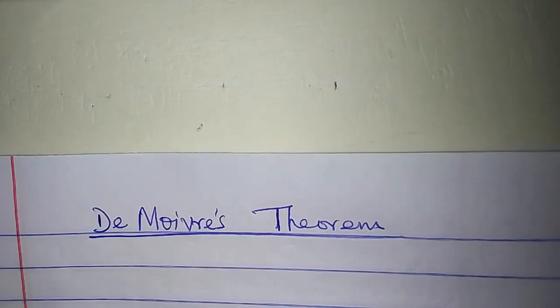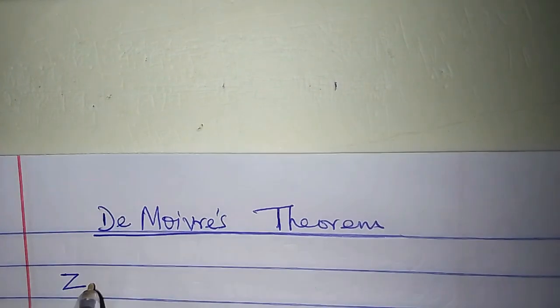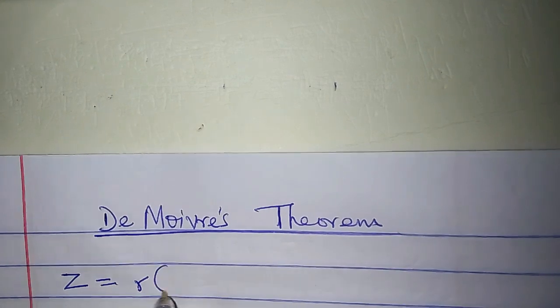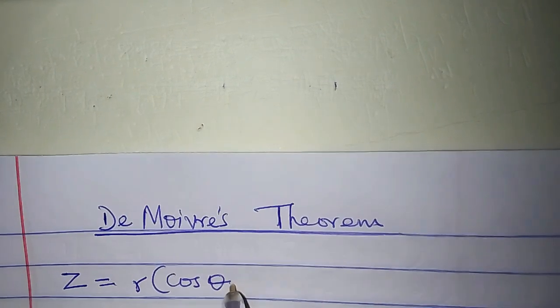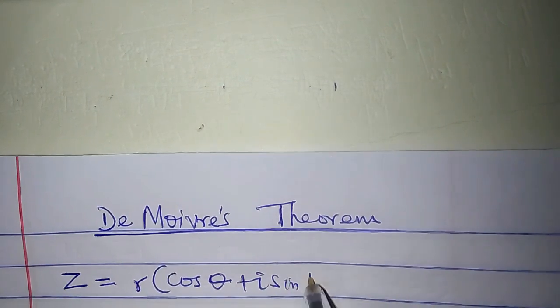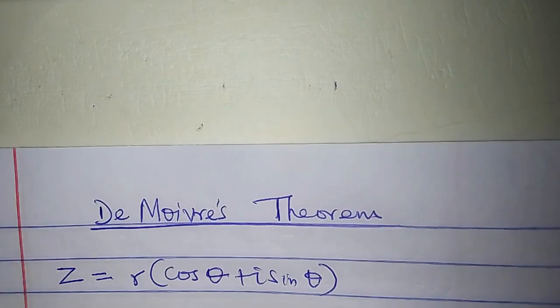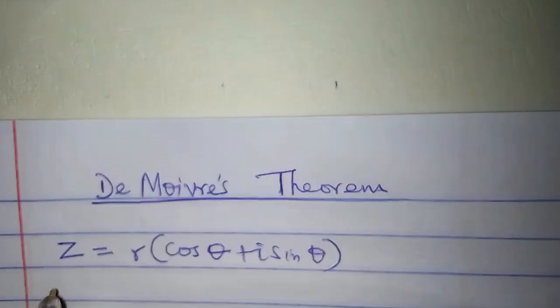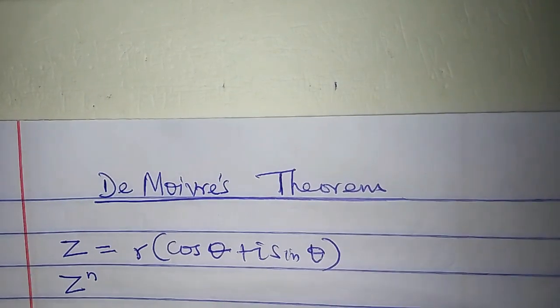If I have a complex number in polar form, z equal to r cos theta plus i sine theta, and I want to determine z to the power of n in polar form...